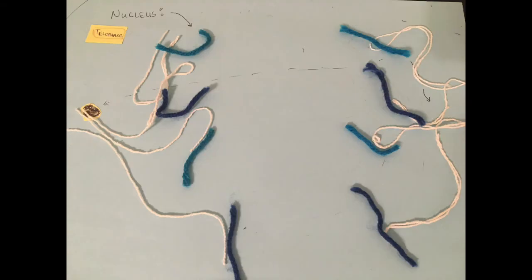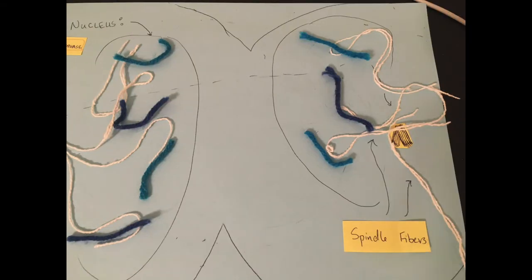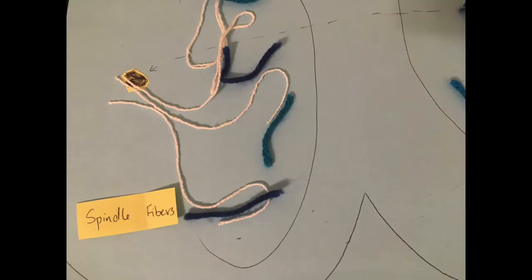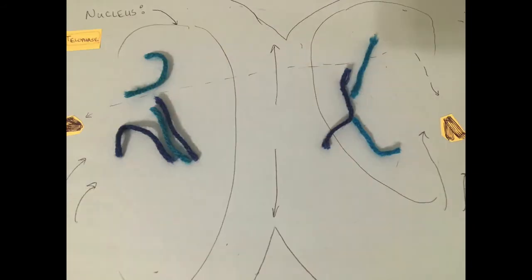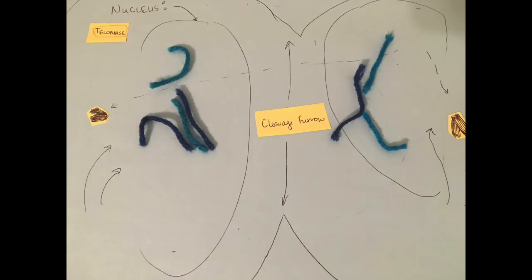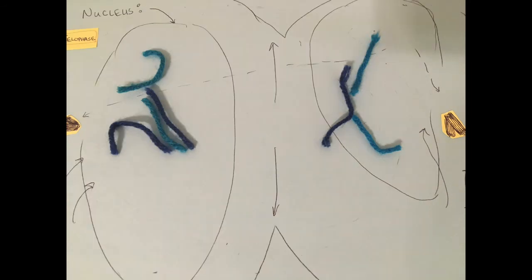The last step in mitosis is telophase, where the sister chromatids are pulled to their own sides by the spindle fibers. As it gets pulled apart, a cleavage furrow forms and the nuclear membranes of the two daughter cells start to reform.